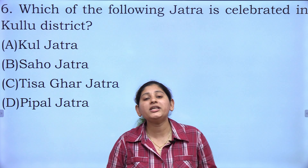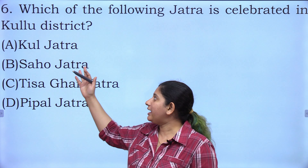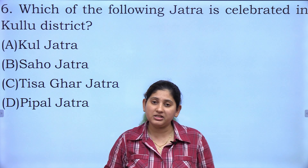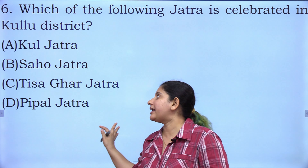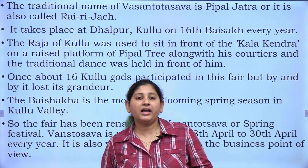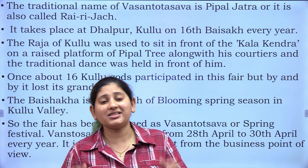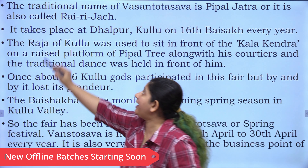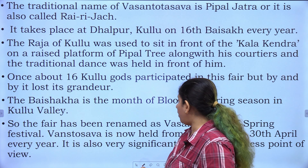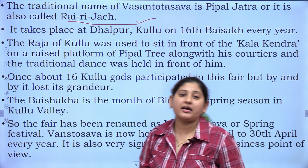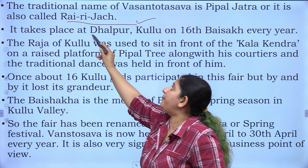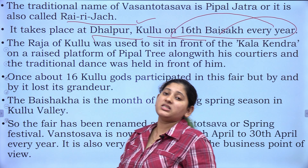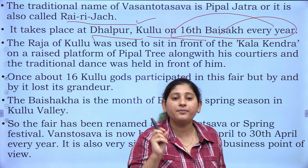The sixth question: which of the following jatras is celebrated in Kullu district? A) Kul Jatra, B) Saho Jatra, C) Tisaghar Jatra, or D) People Jatra. The correct answer is D) People Jatra. The traditional name of Vasantotsav is People Jatra, also known as Rai ri Jach. It is held at a place called Dhalpur in Kullu. Every year on 16th April, during Baisakhi, this festival is celebrated.